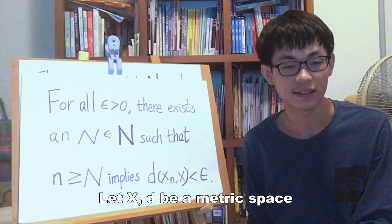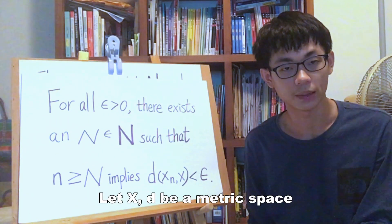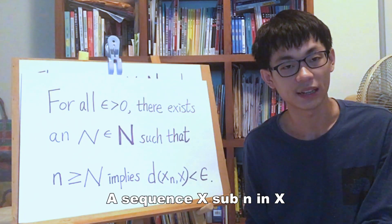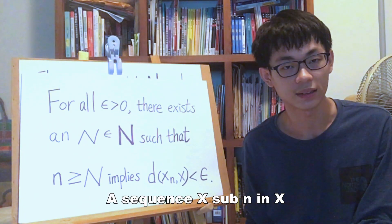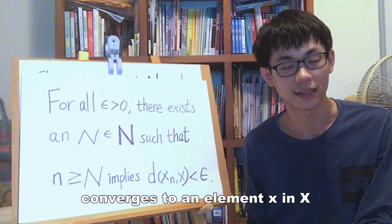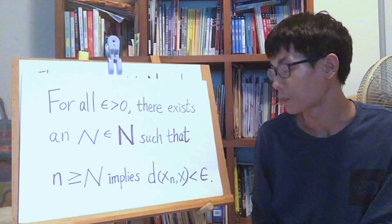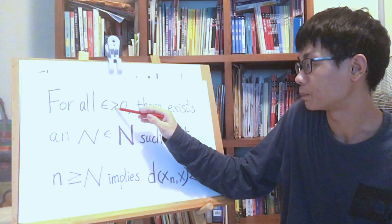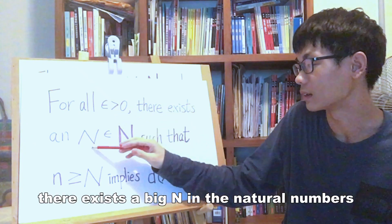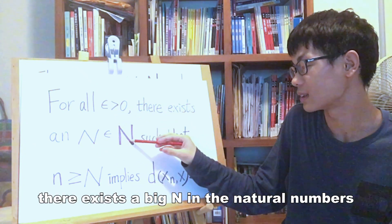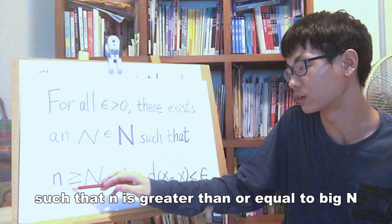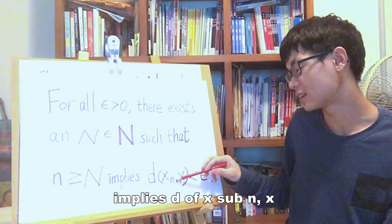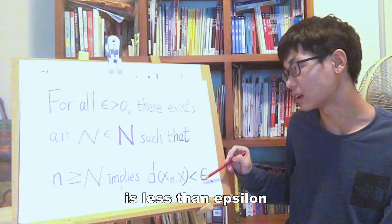Let (X, d) be a metric space. A sequence x_n in X converges to an element x in X if for all epsilon greater than 0, there exists a natural number N such that n greater than or equal to N implies d(x_n, x) is less than epsilon.